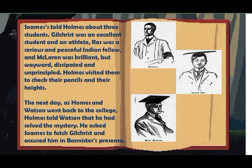Soames told Holmes about three students. Gilchrist was an excellent student and an athlete. Roz was a serious and peaceful Indian fellow. And McLaren was brilliant, but wayward, dissipated, and unprincipled.